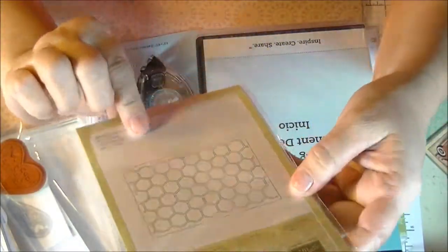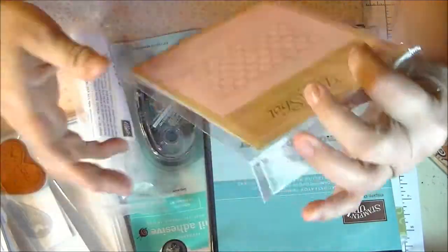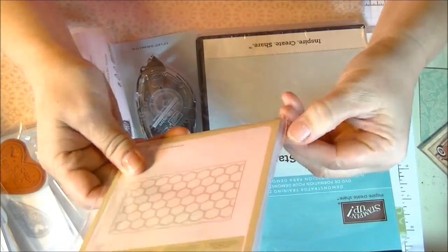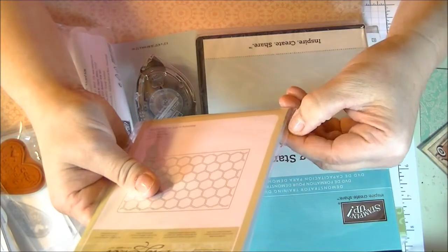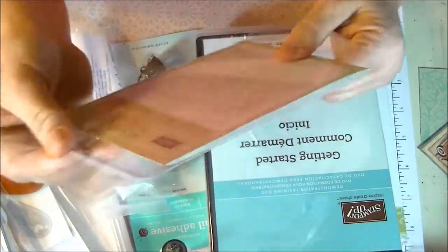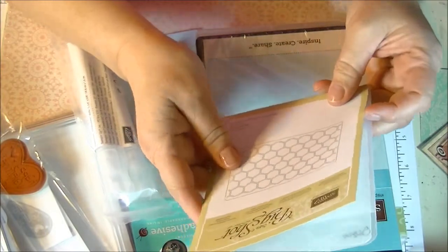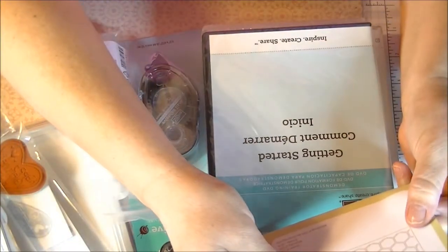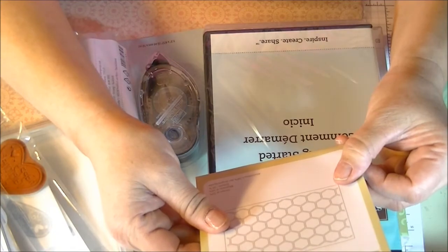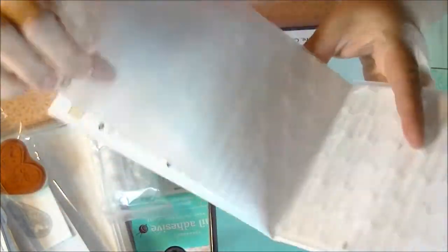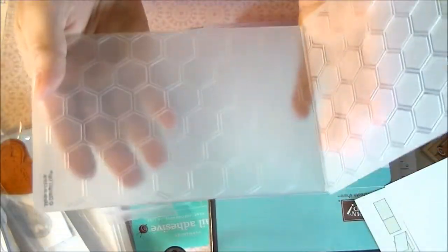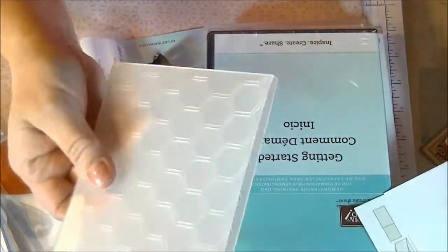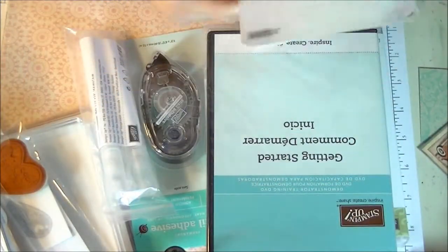Oh, I fell in love with this one. This is the honeycomb textured impression embossing folder. It's so hard because it's so bright in here I can hardly read. You can see how cool that is and I'll be making a card with this. I just fell in love with it.